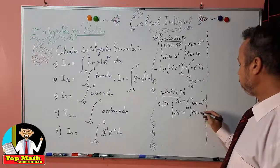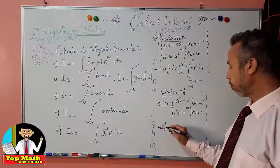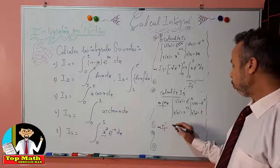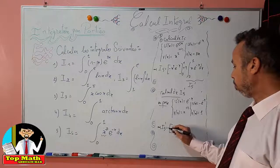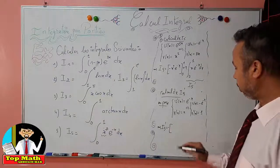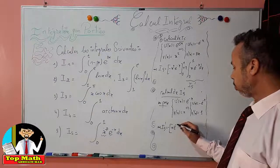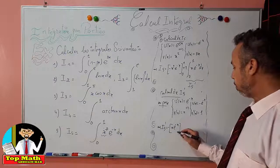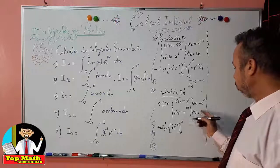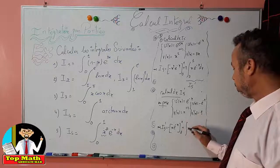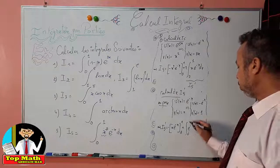From this setup, I5' = [uv] = [−x · e^(−x)] from 0 to 1. Taking the minus sign outside the brackets, and with minus times minus giving plus, we get plus the integral of e^(−x) dx from 0 to 1.